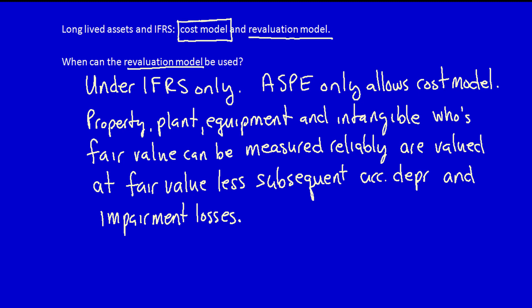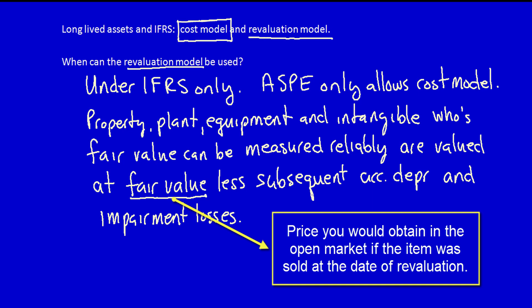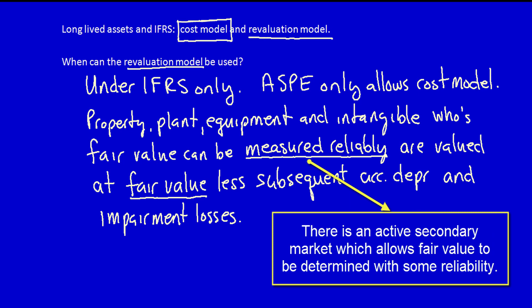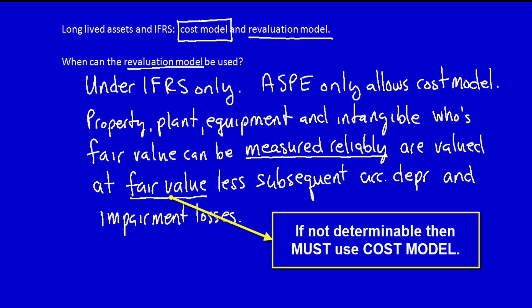There are a few things to unpack. First, what is fair value? For now, we'll assume it's the price that would be received if the asset was sold. What does 'measured reliably' mean? Generally, this means there is an active secondary market where the fair value of the assets can be determined. An example would be used cars, which have a very active secondary market. For instance, if you want to know the value of a 10-year-old Chrysler Dodge Caravan with option package B, you can go onto the internet and determine its fair value.